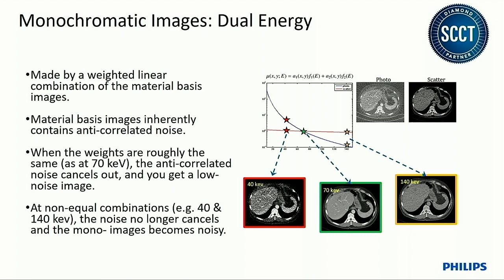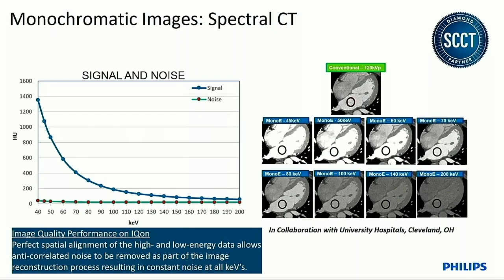On the ICON, this noise amplification at low keV doesn't happen. Because we have perfectly registered data spatially and temporally during acquisition, we can address anti-correlated noise as part of the reconstruction process. The noise across energies is essentially flat on the ICON scanner. Rather than evaluating one component in isolation, we look at the entire imaging chain and the eventual image quality — and Dr. Dan Rall's slides will show you mono-E images that demonstrate this.